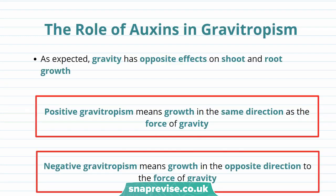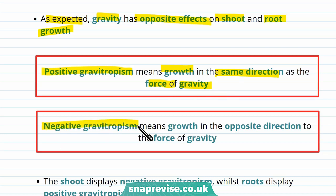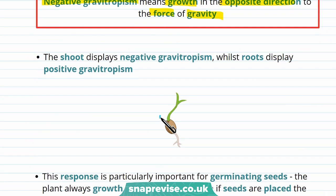Now let's talk about gravitropism. Gravity has opposite effects on shoot and root growth. Positive gravitropism means that growth is in the same direction as the force of gravity, and we see this in the roots of the plant. Negative gravitropism means that growth is in the opposite direction to the force of gravity, and we see this in the shoots. So the shoot grows upward against gravity, while the roots grow downward in the same direction as gravity.